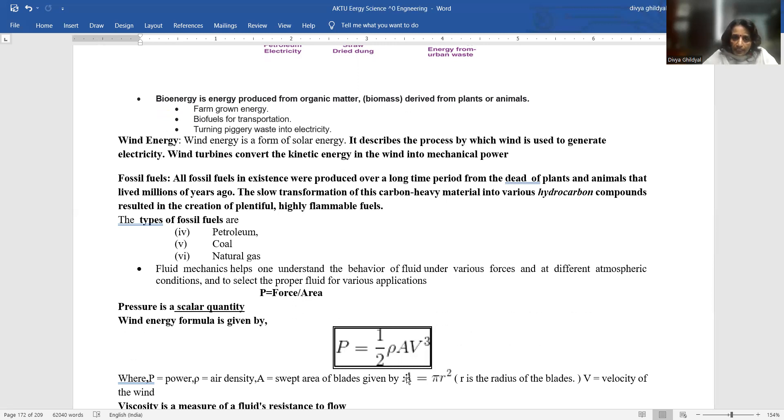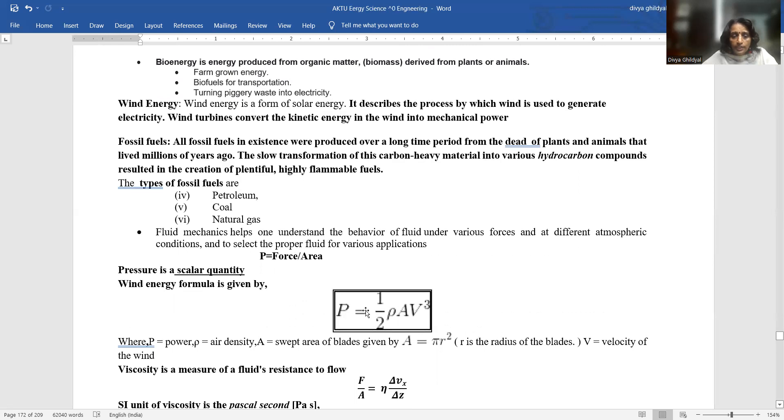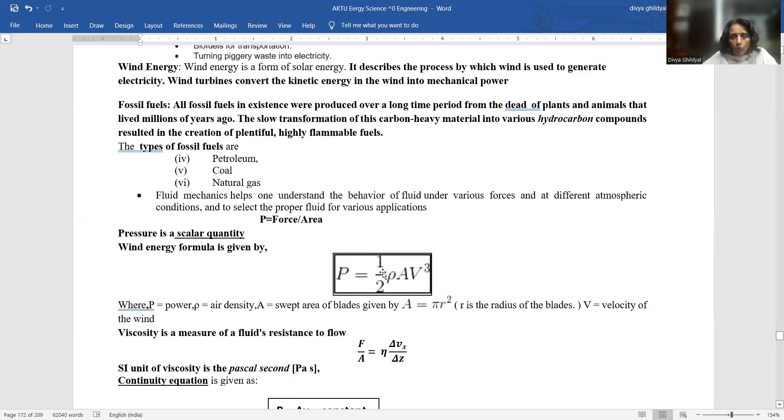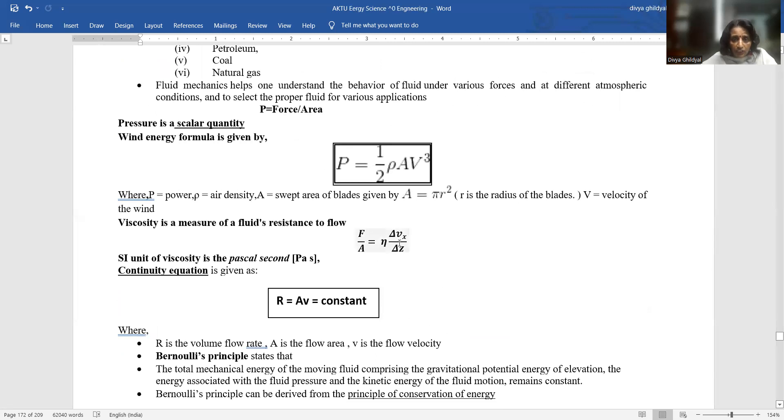Fluid mechanics: one has to understand that fluid mechanics means the utilization of the concept of fluid dynamics in obtaining energy. The wind energy formula is power is equal to half into rho air density into area swept by the blades of my wind turbine into velocity of the wind cubic power, V cube. So, P is equal to half rho A V cube. Viscosity is a measure of the fluid's resistance to flow. Formula is force upon area is equal to viscosity mu into del V by del Z that is the velocity gradient. SI unit of viscosity is Pascal second.